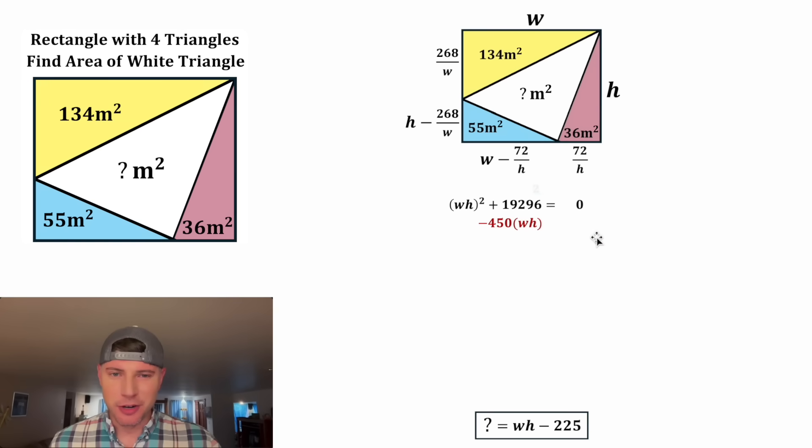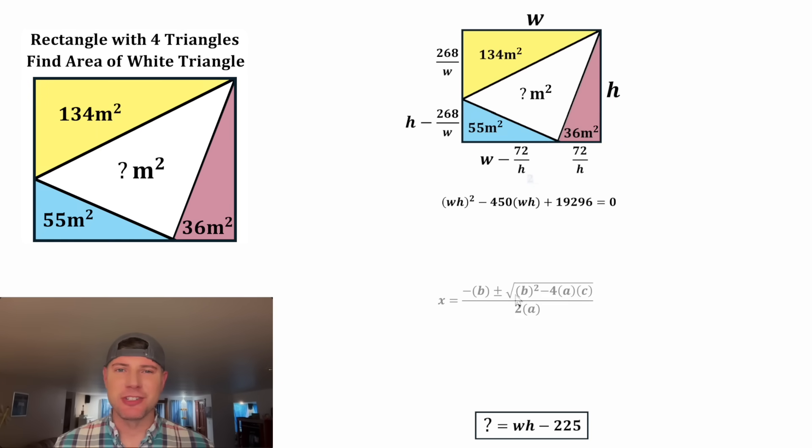Let's set it all equal to zero by subtracting 450 WH from both sides. On the right-hand side, this all becomes zero. And on the left-hand side, we can smush everything together. This might be factorable, but I'm not going to try it. Let's just do quadratic formula.